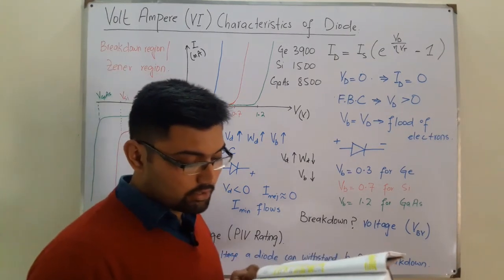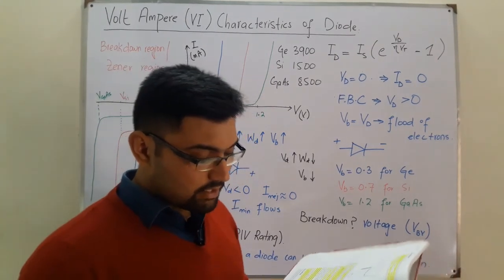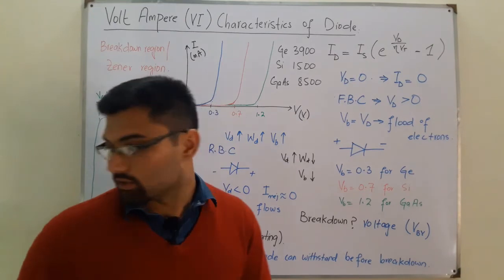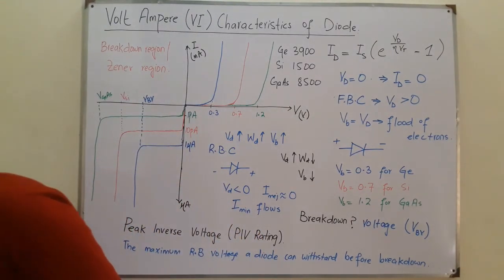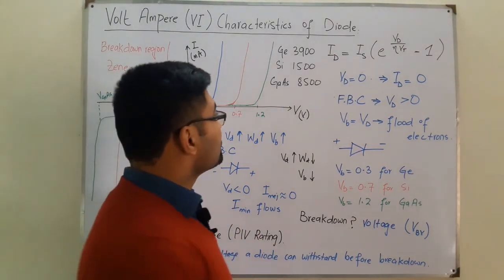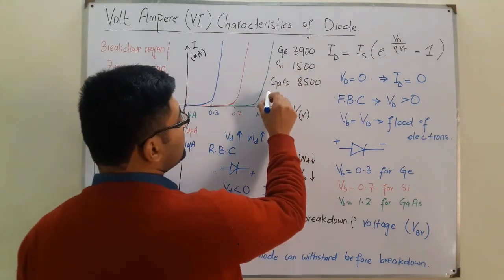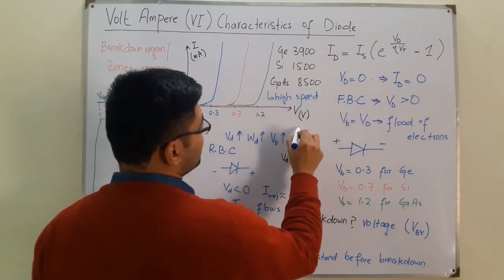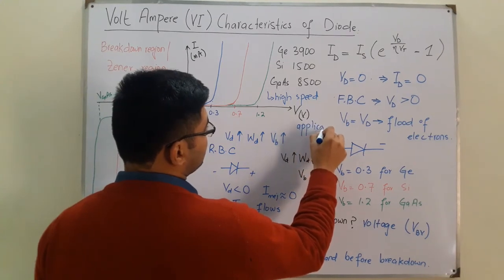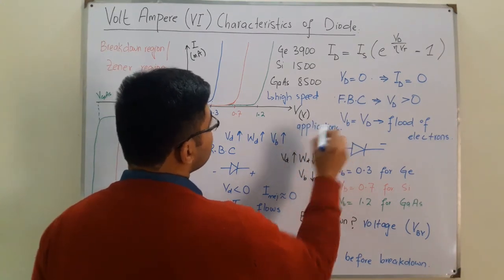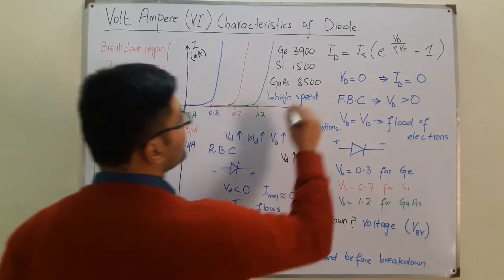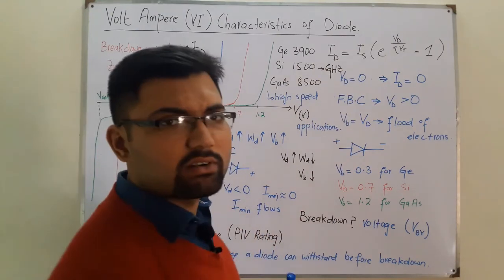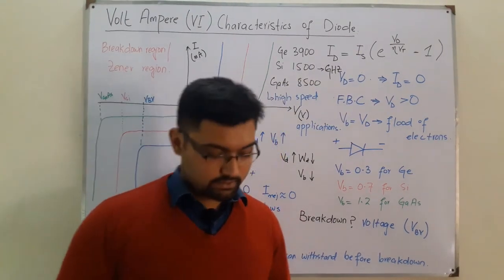Through proper design and careful control of doping levels, silicon is also found in systems operating in the gigahertz range (10^9 Hz). So gallium arsenide and germanium are used in very high-speed applications, while silicon is also usable in the gigahertz range.